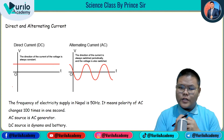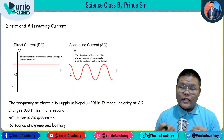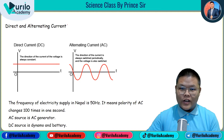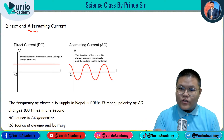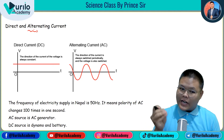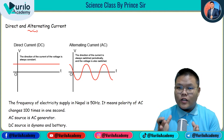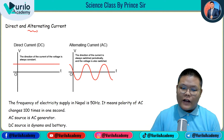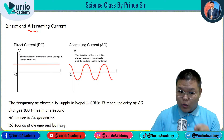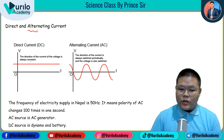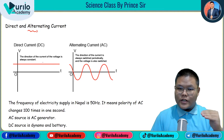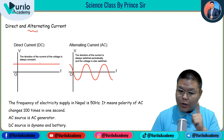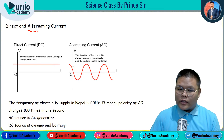Direct current and alternating current — basically, in our homes, the daily home appliances we use run on alternating current. Nepal Sarkar (the government of Nepal) supplies us with alternating current. In short, DC and AC. On the graph, the x-axis represents voltage, and the direction of the current/voltage constantly moves — the cursor keeps moving and doesn't fluctuate.